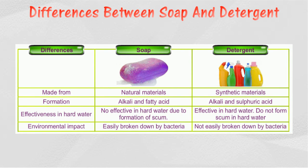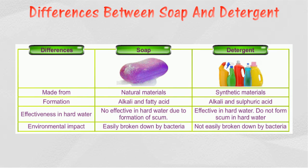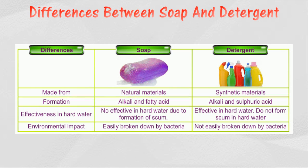Soap differs from detergent in some aspects. Soap is made from natural materials found in animals and plants, while detergent is derived from synthetic materials from petroleum. Formation of soap occurs through a reaction between an alkali and a fatty acid, while detergent is formed through a reaction between an alkali and a sulfuric acid.